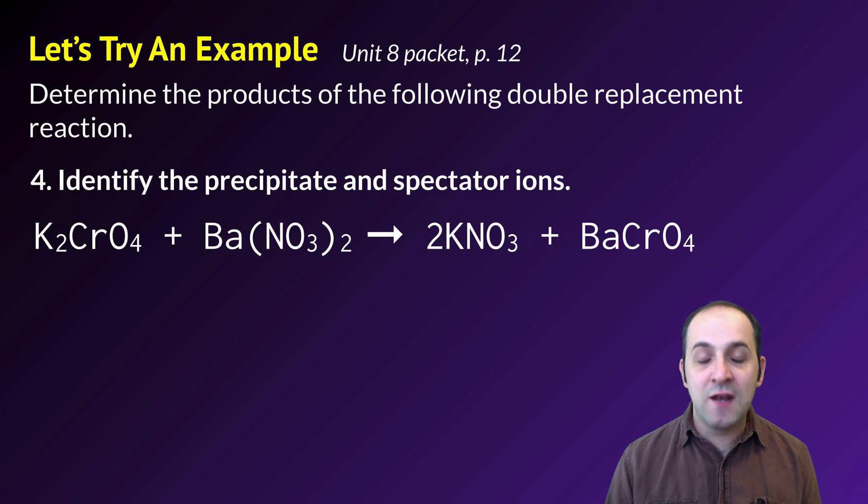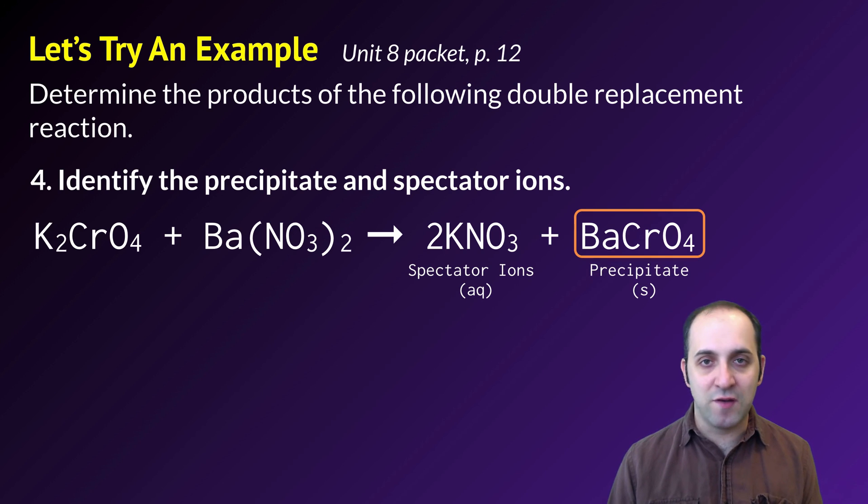That done, I can figure out the precipitate and the spectator ions. Going to reference table F, I see that nitrate is always soluble, as are group 1 ions, so potassium nitrate is my spectator ion and barium chromate is my precipitate. And that's it. I'm done. Does this make sense? If it doesn't, write down any questions that you have before we wrap up.